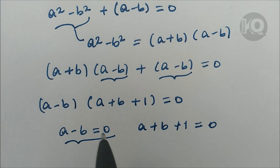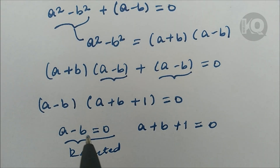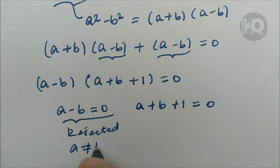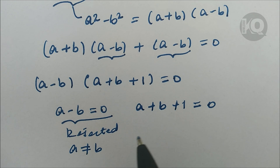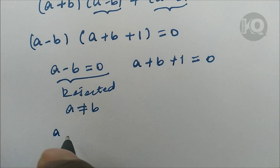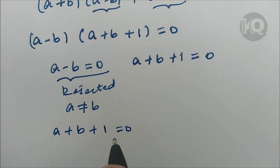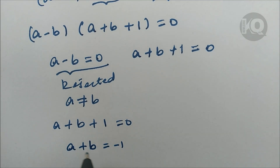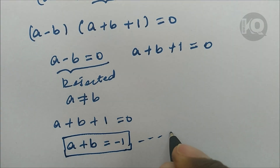The case a minus b equals zero is rejected because our initial condition requires a to be different from b. So the remaining case is a plus b plus 1 equals zero, which gives us a plus b equals minus 1. Let's call this equation three.